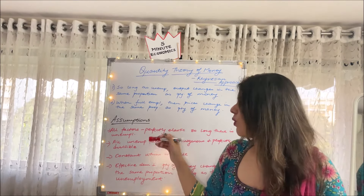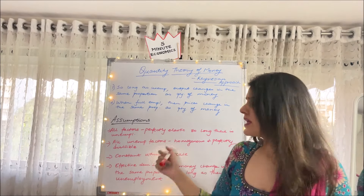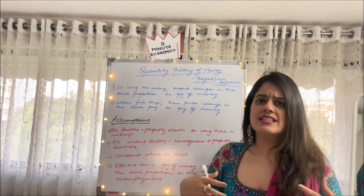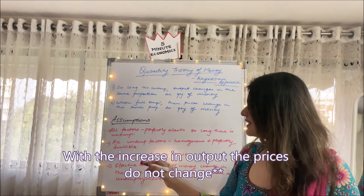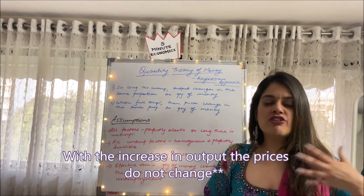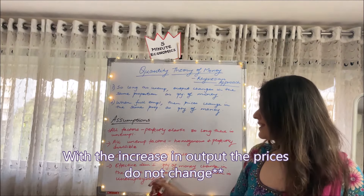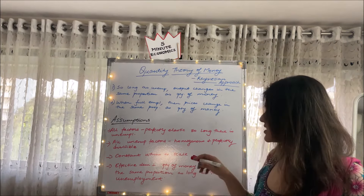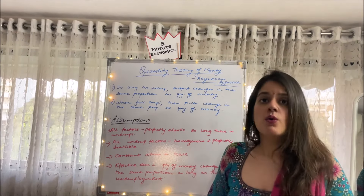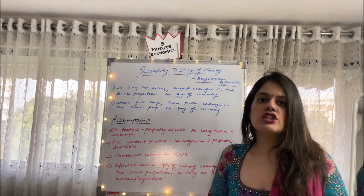Moving ahead to the assumptions. All factors are perfectly elastic so long as there is unemployment. Secondly, all unemployed factors are homogeneous, perfectly divisible, and interchangeable. Thirdly, there is constant returns to scale, meaning that with an increase or decrease in price, output doesn't change. And the effective demand and quantity of money change in the same proportion so long as there is unemployment.